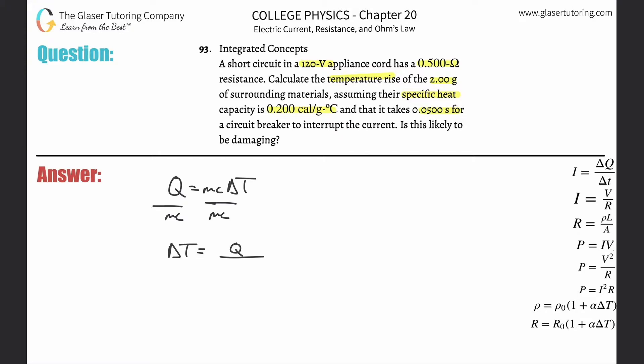The change in temperature will equal the heat gained by the material divided by the mass times the specific heat. Now to answer the question, I need to know these three variables. Do we know the energy Q? They gave us a voltage and a resistance. Knowing voltage and resistance, we can calculate current or power.